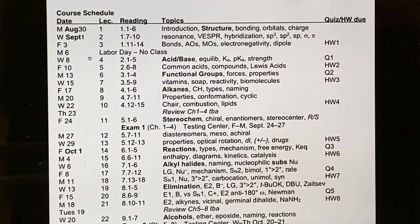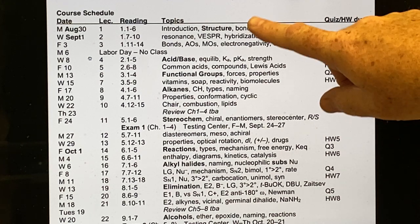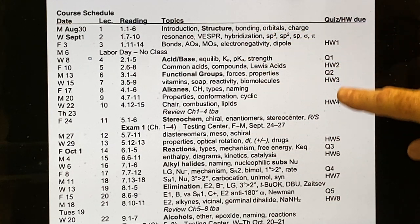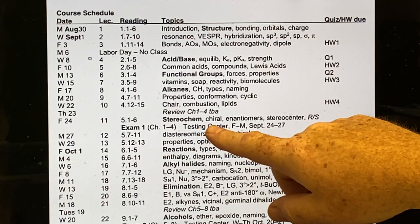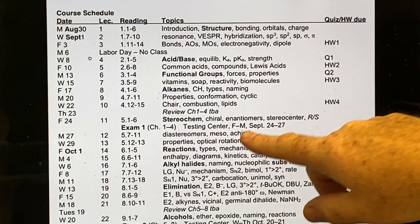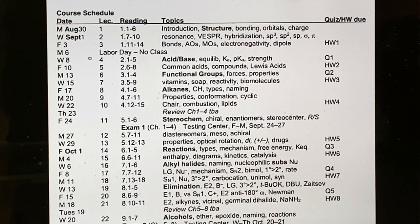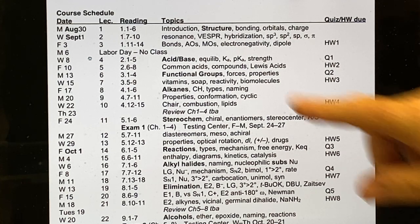The course schedule is quite detailed. There's a PDF copy of it in Learning Suite, and there's also an electronic version. Day-to-day, you can always see what topic we're covering and when things are due. You'll see topics going by, due dates for homework assignments, quizzes, and tests. Exam one will be over chapters one through four, covering topics like structure, bonding, and the assigned reading.